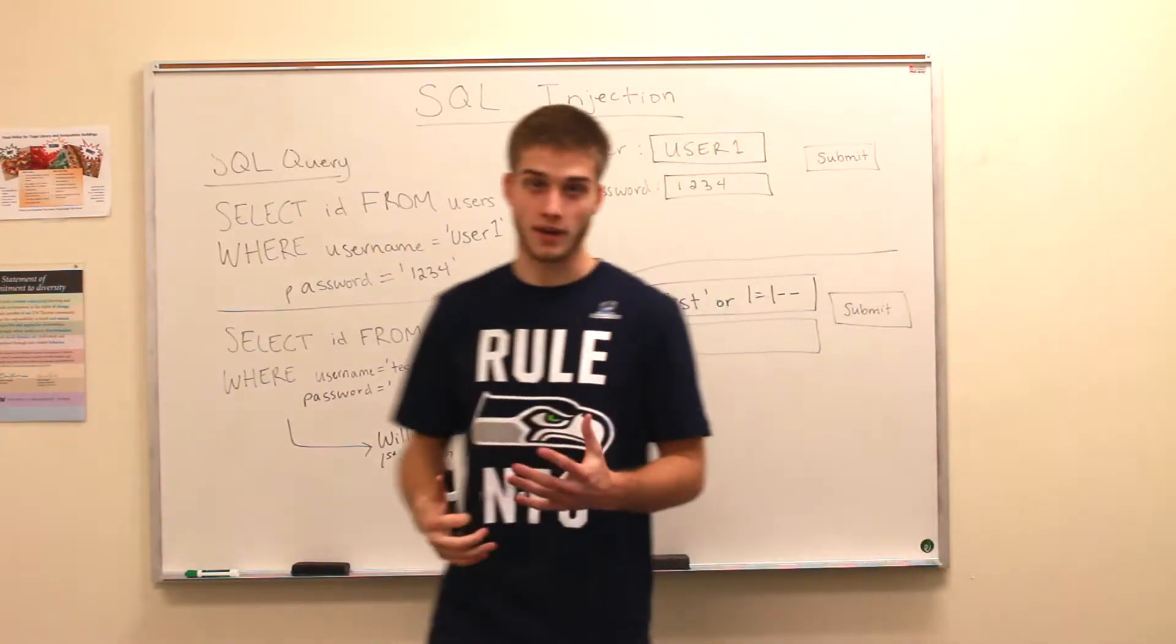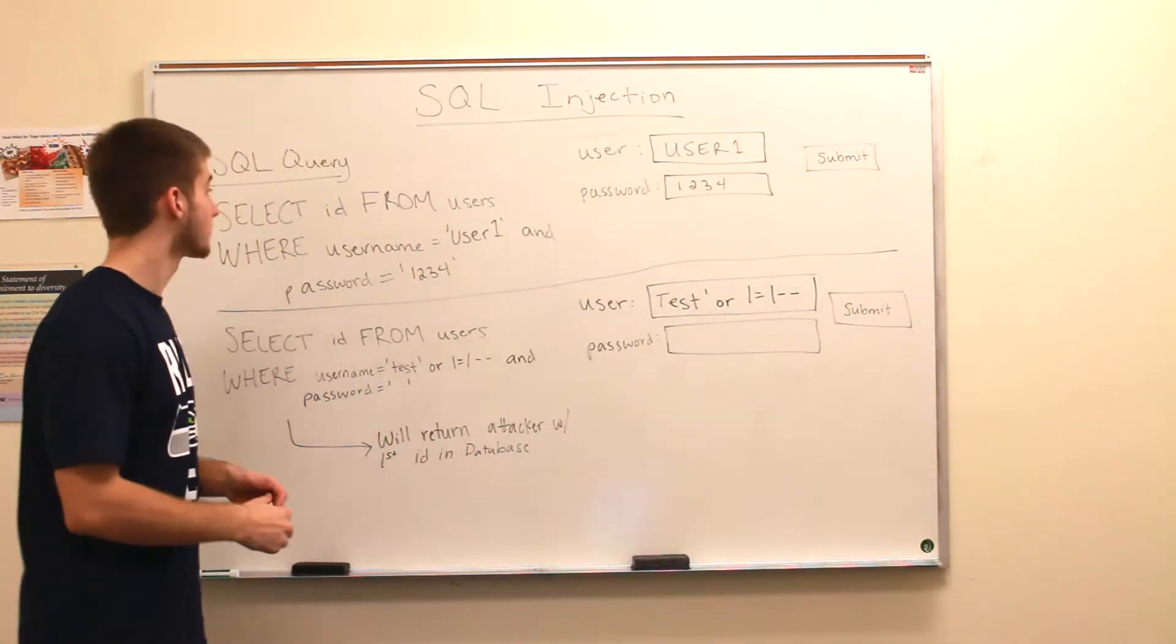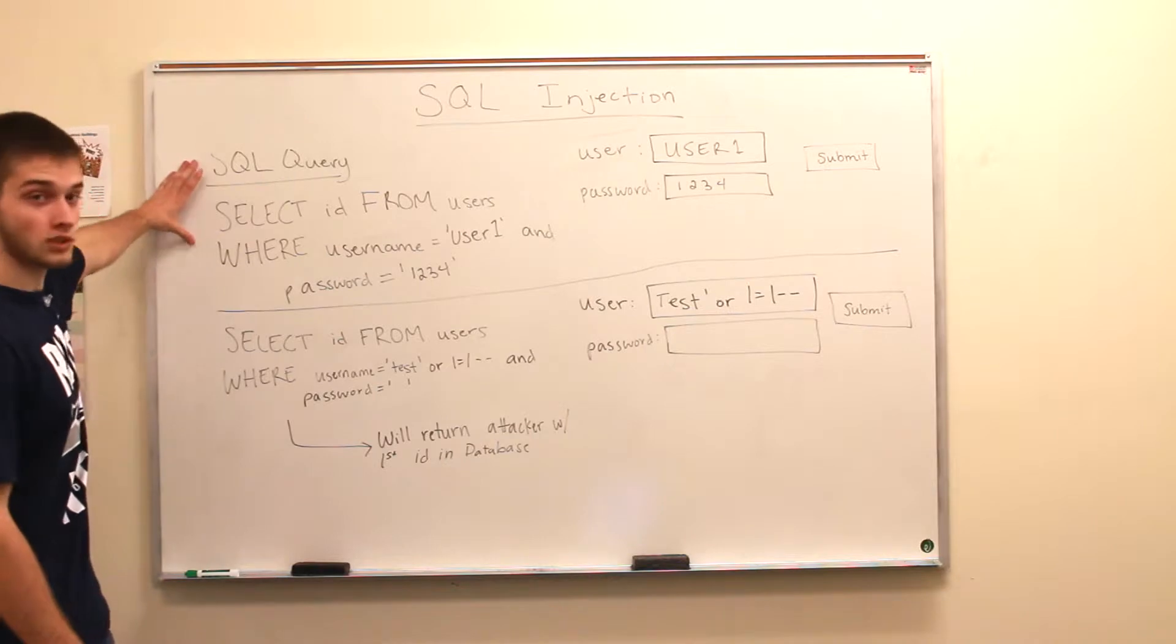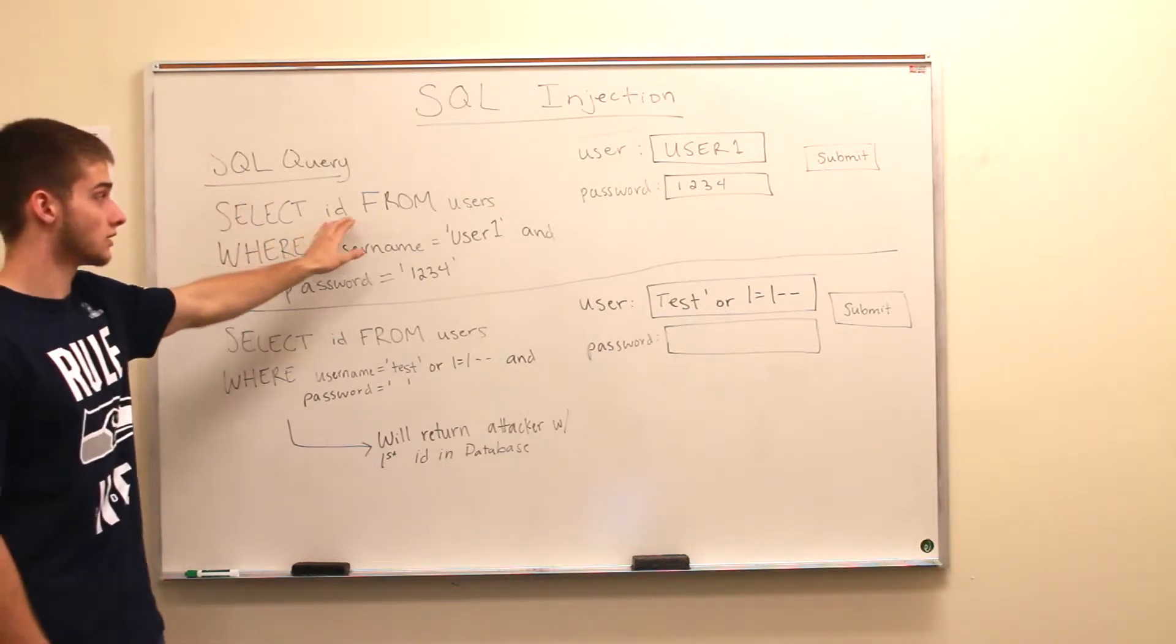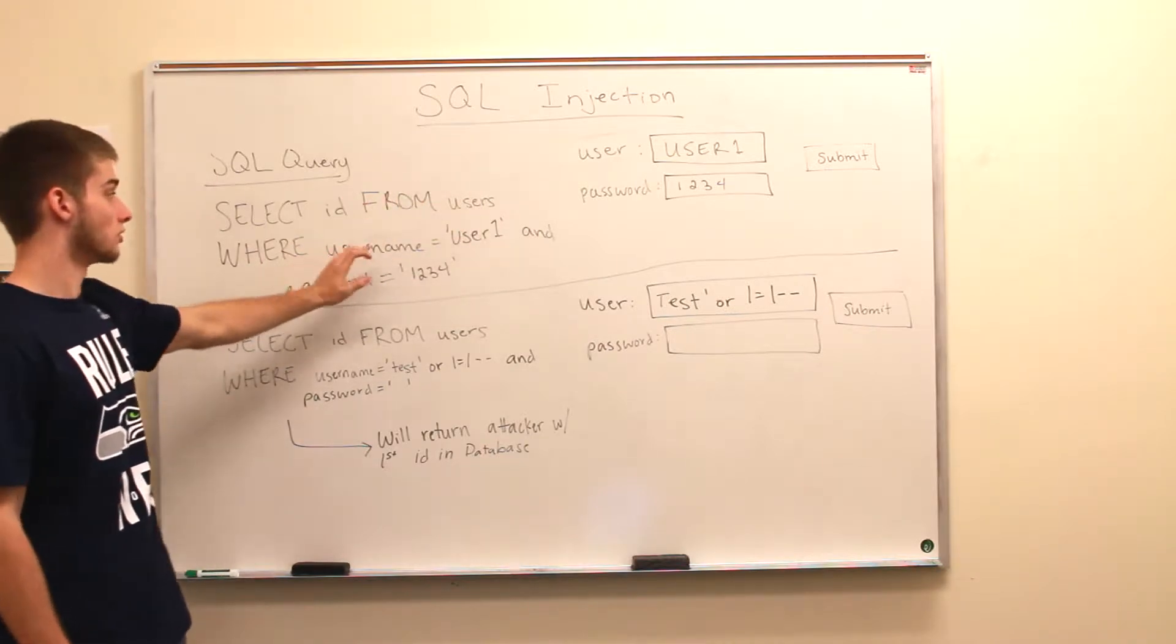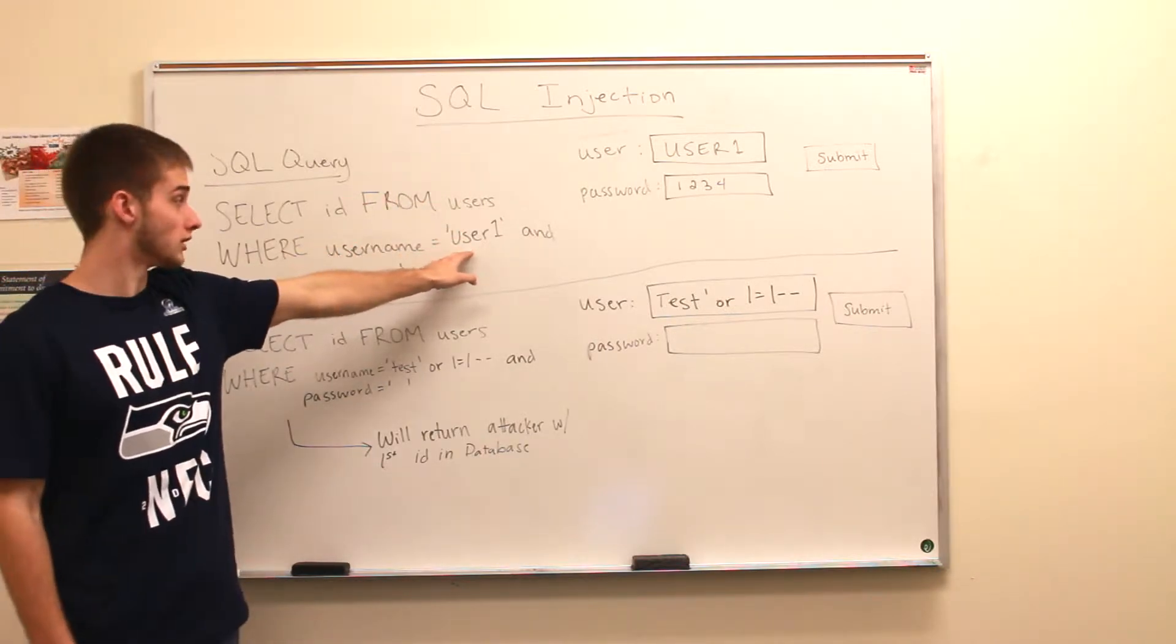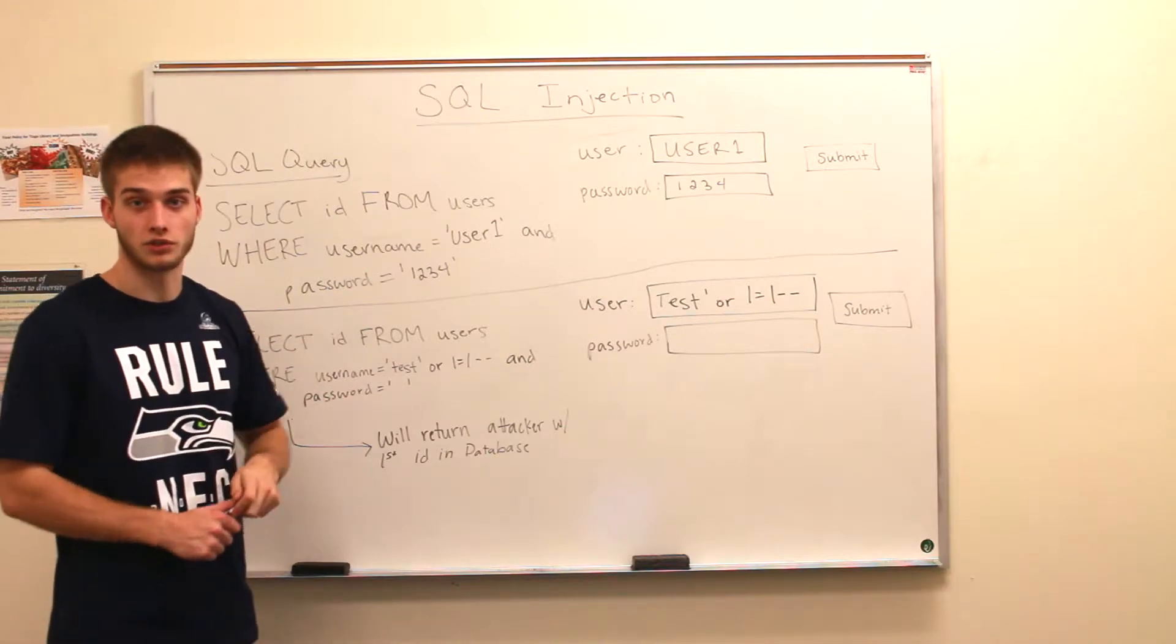What happens on the backend of the database, which you will not see, is that a SQL query is run. It's going to select the ID from the table users where username is user1 and password is 1234.